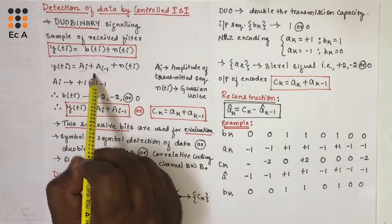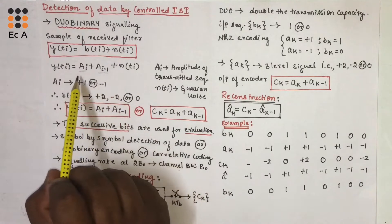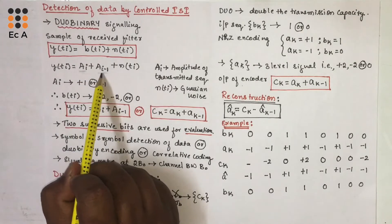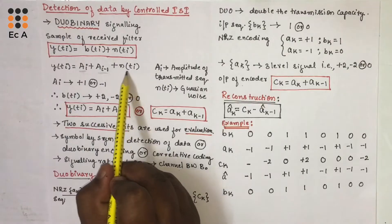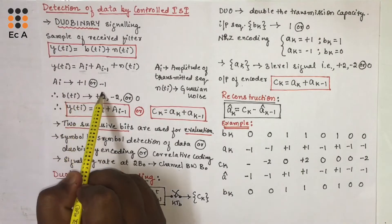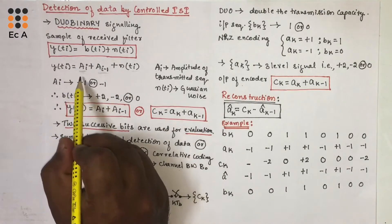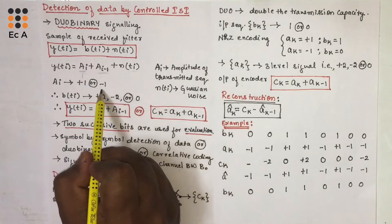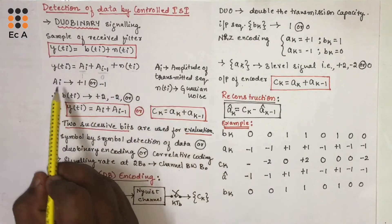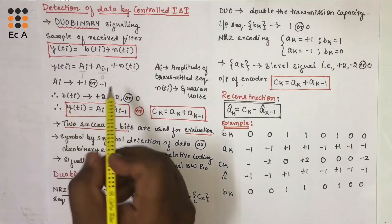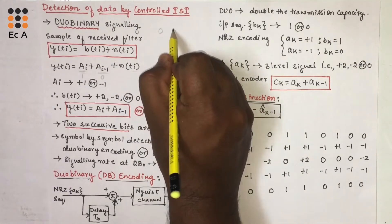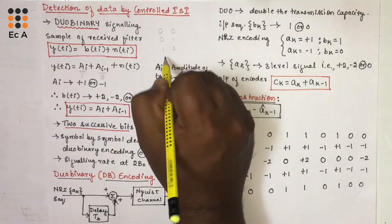So Ai represents the amplitude of the present bit and Ai-1 represents the amplitude of the previous bit. From this we can understand that in Duobinary signaling, we are considering two successive bits for evaluation. Ai can have the value +1 or -1. We will give the value +1 if symbol 1 is transmitted and -1 if symbol 0 is transmitted. Since we are taking two successive bits, we can have four combinations: 0-0, 0-1, 1-0, and 1-1.